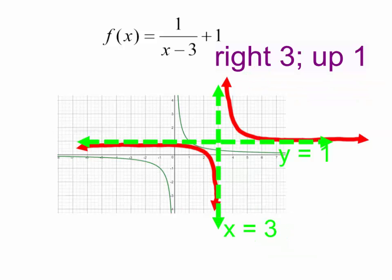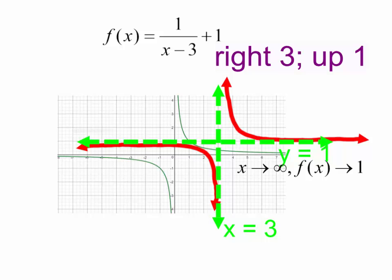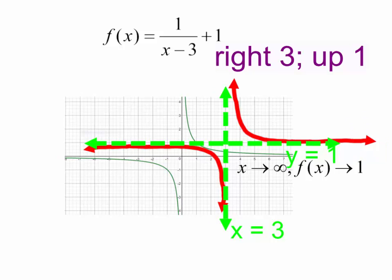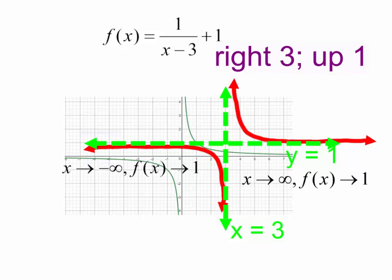Let's talk about the end behavior on this graph. As my x's are approaching positive infinity, getting bigger and bigger, you see how that red graph is approaching 1 — not going up or down, getting very close to the line y equals 1, though not actually touching it. And as my x's are approaching negative infinity, getting smaller and smaller, the function is leveling off at y equals 1.